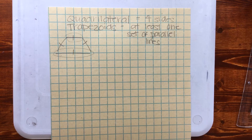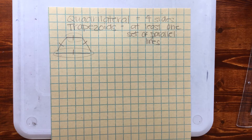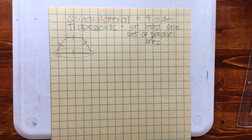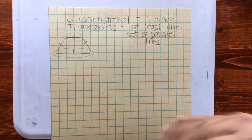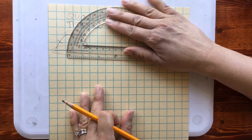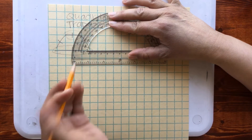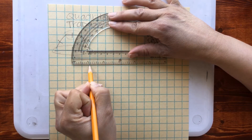Today I want to draw a trapezoid that can also be called a parallelogram. That's our new category we're going to learn today. So we're going to draw a trapezoid that is also called a parallelogram. I'm going to start drawing, and if you're doing this at home you could be doing this too using a straight edge.